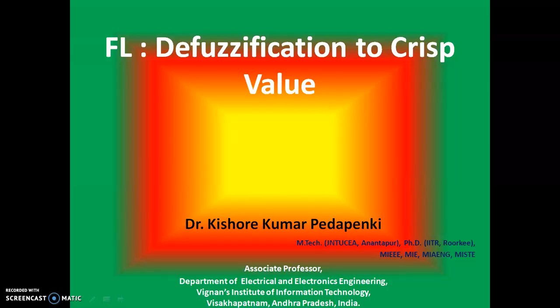This is the second and last video under the heading of defuzzification. Previously we have seen defuzzification to crisp sets, that means the conversion of fuzzy sets into crisp sets. Now we are dealing with defuzzification to crisp value, that means conversion of fuzzy sets into a crisp numerical value.